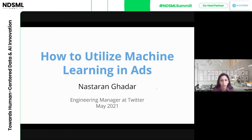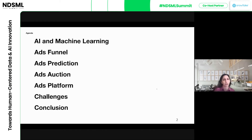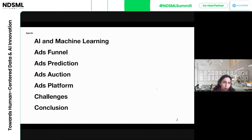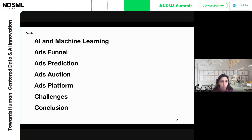Before getting into details, I'm going to go over the overview of the material. We'll start with terms of AI and machine learning and how they correlate, and what we need for a machine learning system to work. Then we'll go into the steps through an ads funnel — ads prediction, ads auction, and the platform where we serve ads. We'll also talk about common challenges in ads prediction, and eventually conclude.